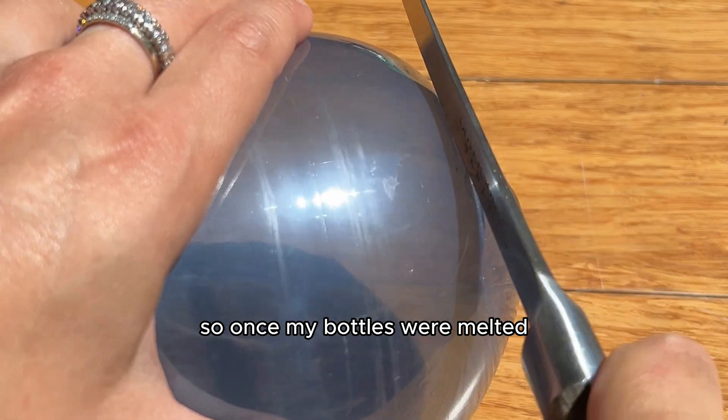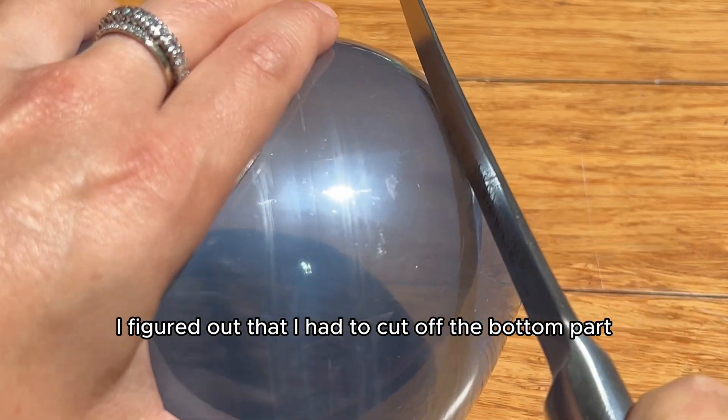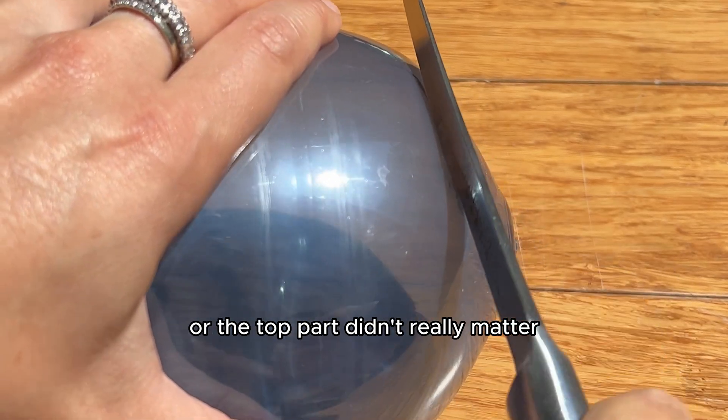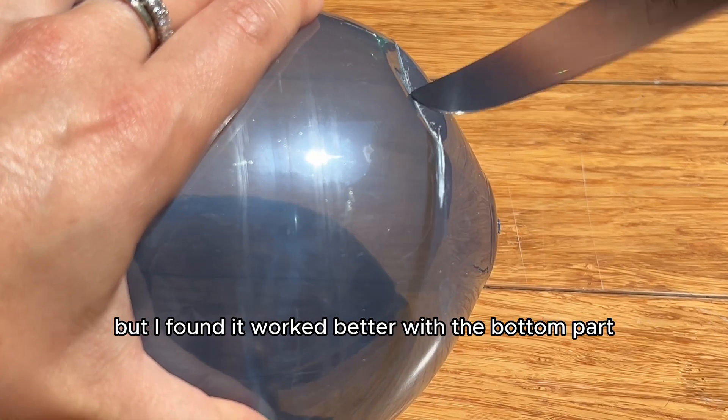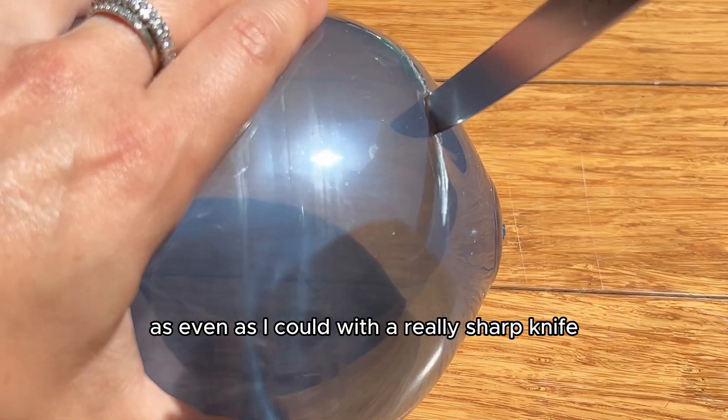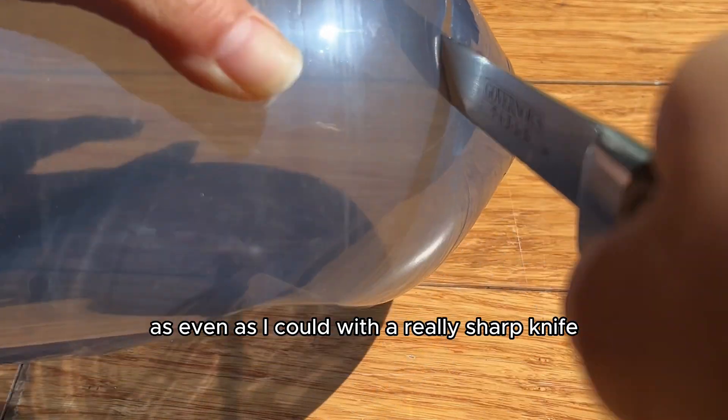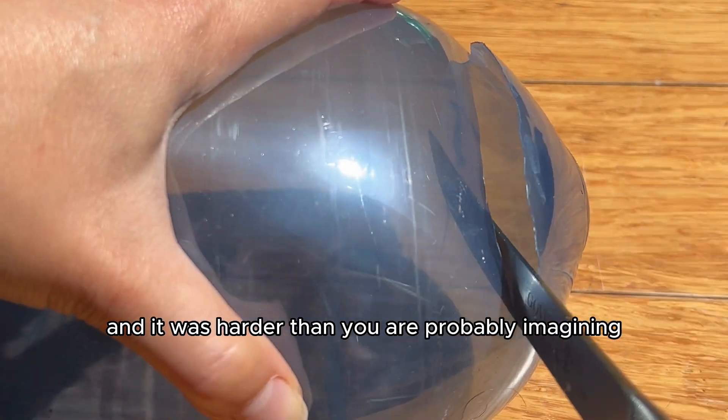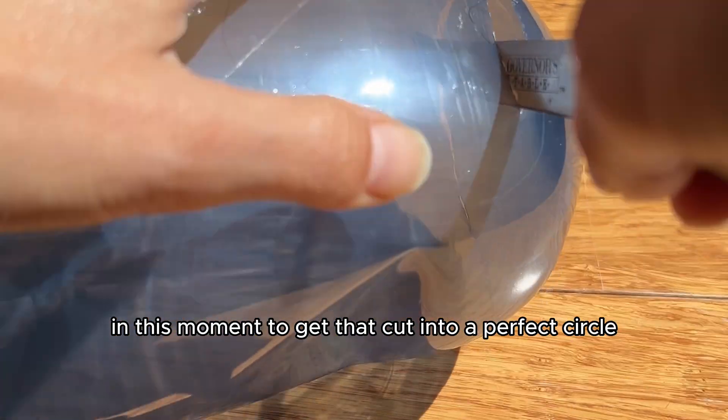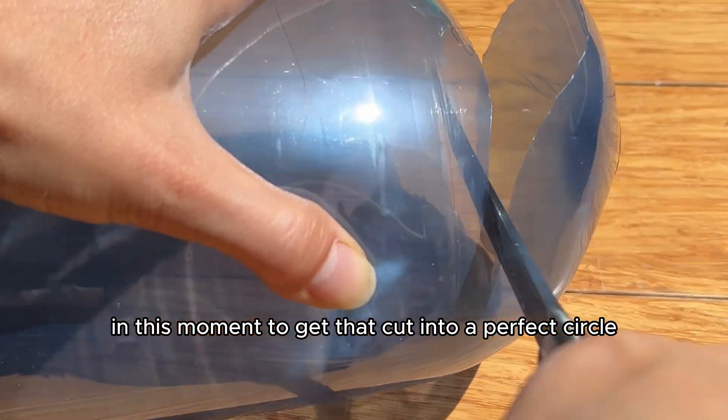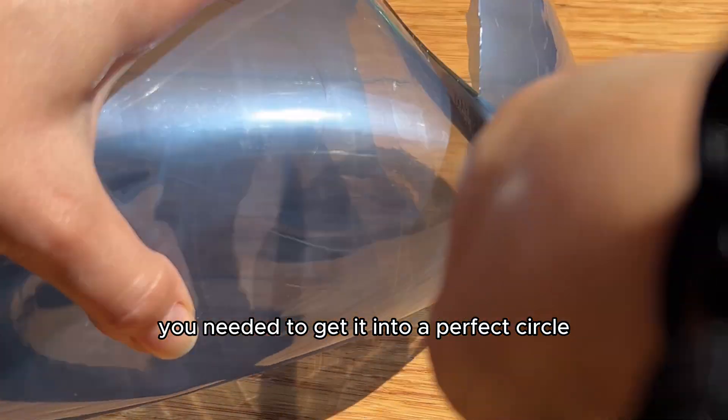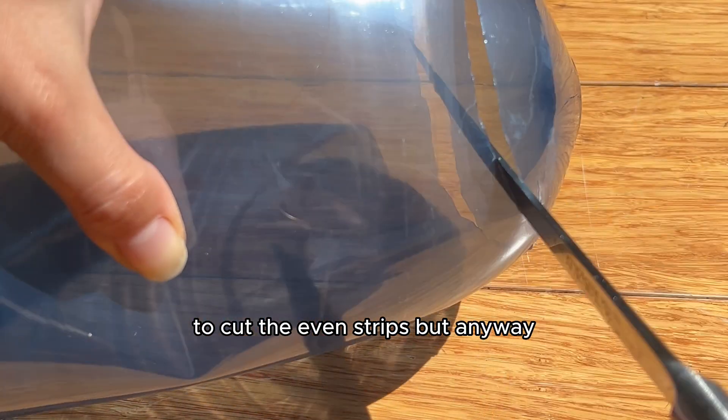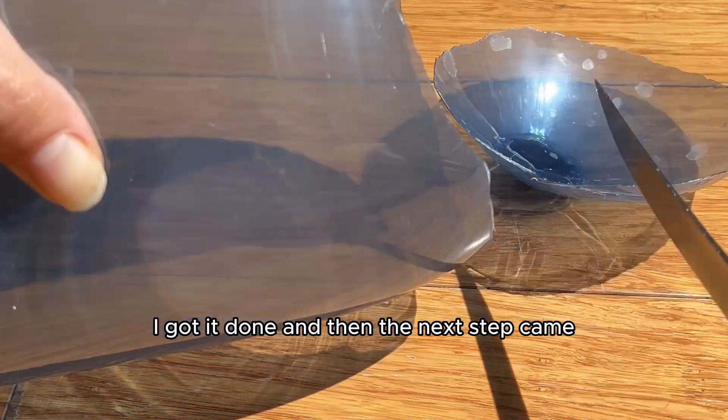Once my bottles were melted I figured out that I had to cut off the bottom part or the top part, didn't really matter but I found it worked better with the bottom part as even as I could with a really sharp knife. That was to get the bottle ready to cut into those strips, and it was harder than you are probably imagining to get that cut into a perfect circle.